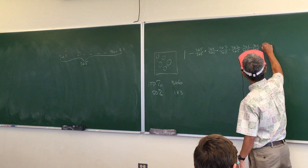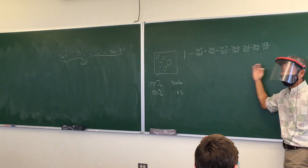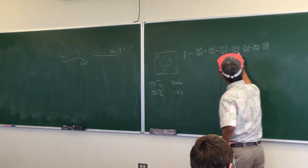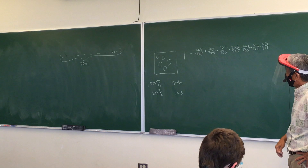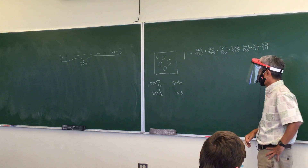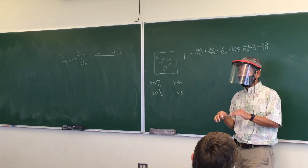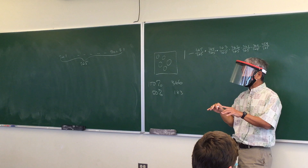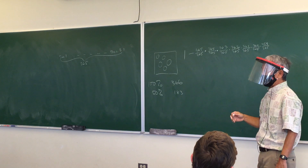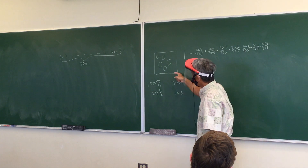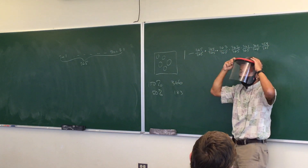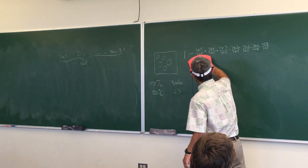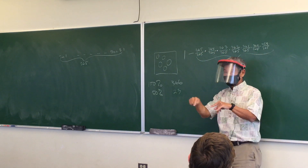What if a sixth person enters? You extend the pattern with one more term, then subtract from one. What if a seventh? Same thing — just add one more fraction. Remember this pattern, because that's what you have to do. You only need 23 people in a room for the probability to first exceed 50% that at least two share a birthday. Multiply 23 of these fractions and subtract from one — that's the first time it goes over 50%.